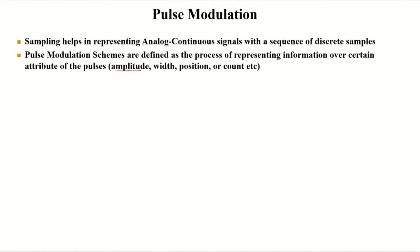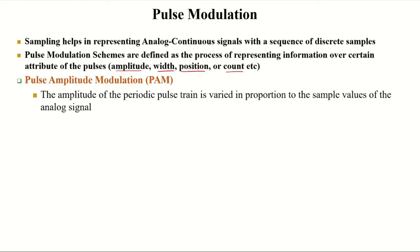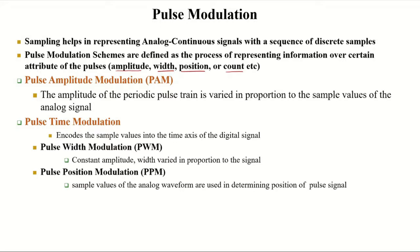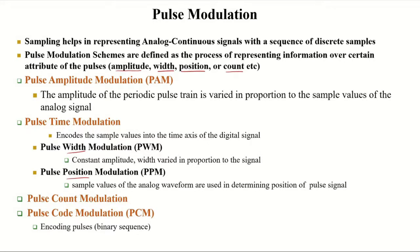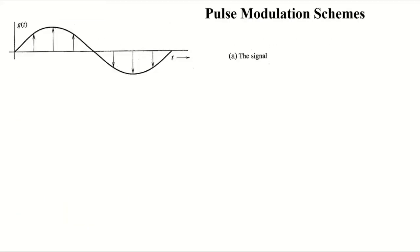In pulse modulation schemes, information is represented on a certain characteristic of the pulse — the amplitude, width, position, or pulse count in a certain time span. We can change the amplitude of a certain pulse to represent a certain information signal sample, or along the time axis we can change the width or position of a pulse to represent information. We can also change the number of pulses generated in a certain sample interval, or encode the pulses in terms of binary sequences — such a scheme is referred to as pulse code modulation.